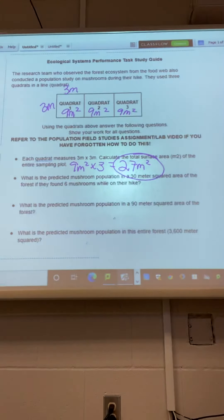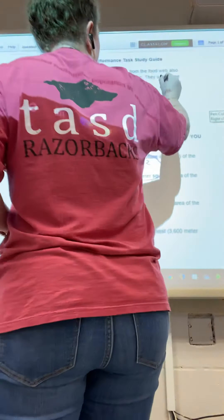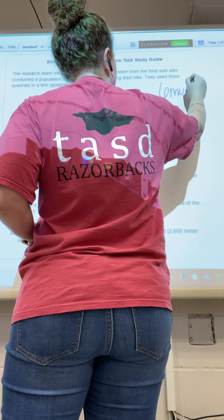So the next line, change my color. What is the predicted mushroom population in a 30 meters squared area of the forest if they found six mushrooms while on their hike? So we'll write that up here. They found six mushrooms.